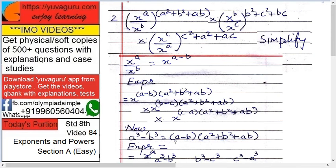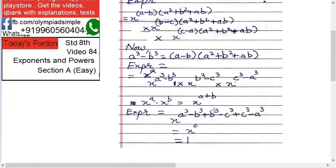A cube minus b cube equals a minus b into a squared plus b squared plus ab. We are finding the similarity. So this expression becomes x raised to a cube minus b cube, the second one becomes b cube minus c cube, and the third one becomes x raised to c cube minus a cube.